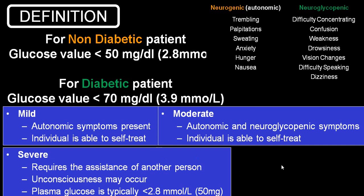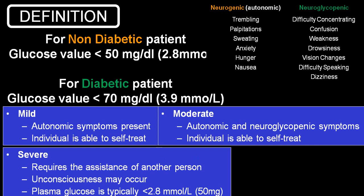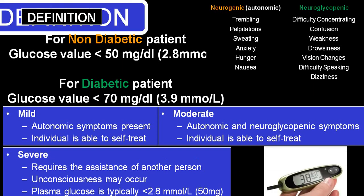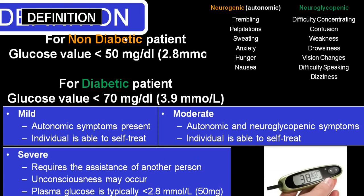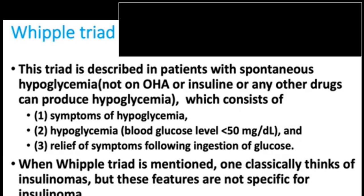We usually divide into non-diabetic and diabetic person. Symptom-wise: autonomic and neuroglycopenic symptoms. Severity-wise: mild, moderate, and severe. These are the few terms which we should be aware of.